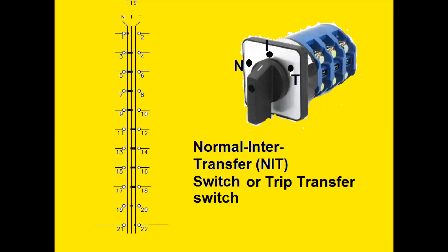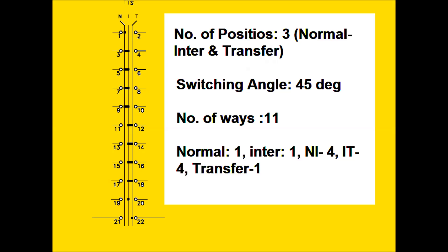Hello friends, today we will discuss the NIT switch — Normal-Inter-Transfer switch. It is sometimes called a trip transfer switch. In the NIT switch there are three positions: Normal, Inter, and Transfer. The switching angle between Normal and Inter is 45 degrees, and again between Inter and Transfer is 45 degrees. In Normal position there are two contacts, in Inter position there is one contact, in Normal-Inter position there are four contacts, in Inter-Transfer position there are four contacts, and in Transfer position there is one contact.